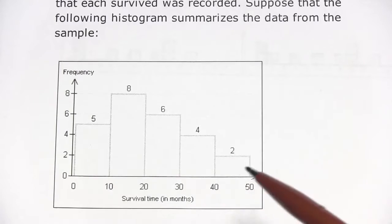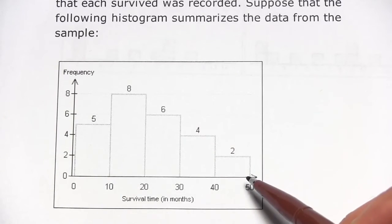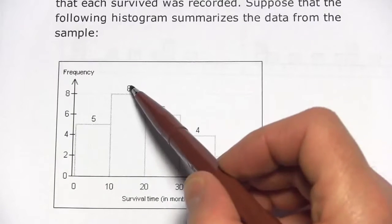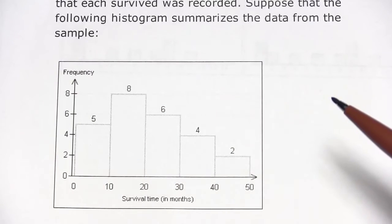So this histogram shows the class that each of these patients was in based on their survival time and then how many patients in each of those classes.